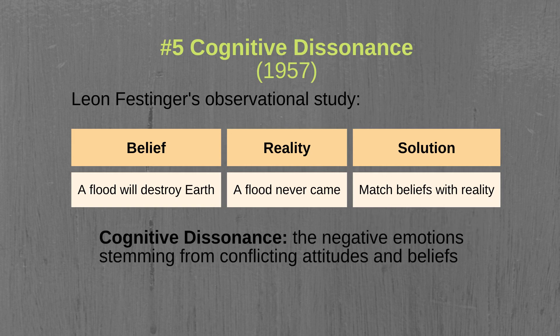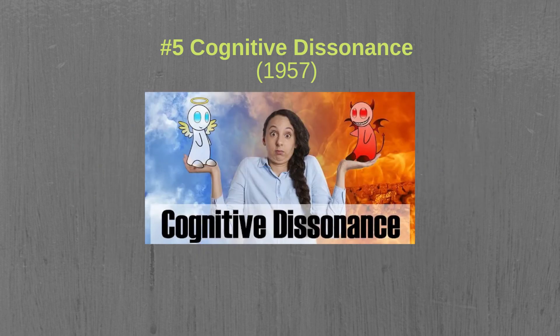The negative emotions that stem from conflicting attitudes and beliefs is referred to as cognitive dissonance. This study is one of the more influential studies in psychology as it sparked a tremendous amount of experiments on the topic of cognitive dissonance. If you want to learn more about cognitive dissonance, you can check out our Psychology 101 video where we discuss the topic in more detail.